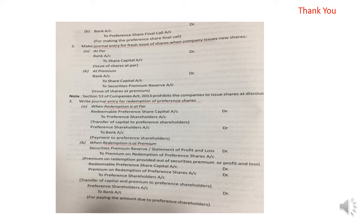For a fresh issue, the basic entry is: Bank Account debit to Share Capital. If the issue is at a premium, the entry is: Bank Account debit to Share Capital and to Share Premium. For example, if share capital is 90 and premium is 10, the bank account is debited for the full amount.